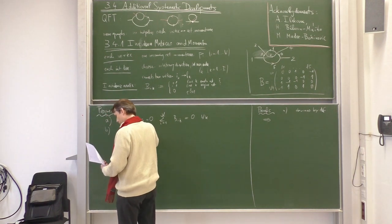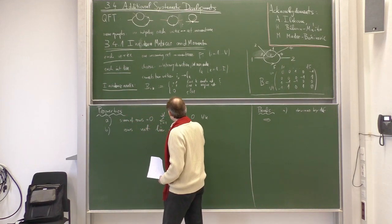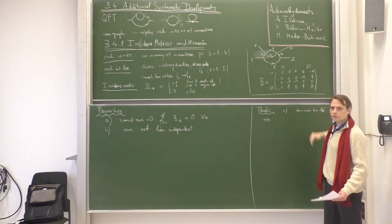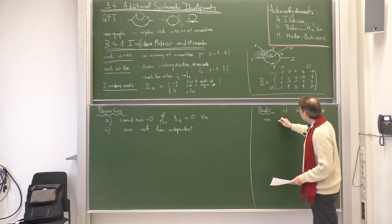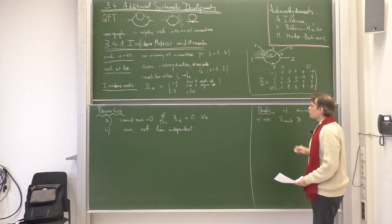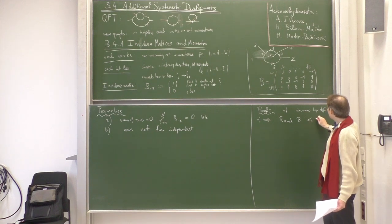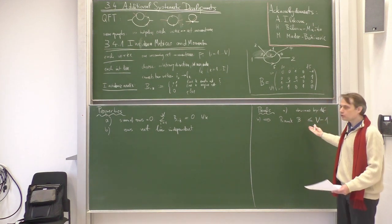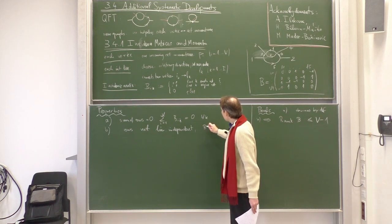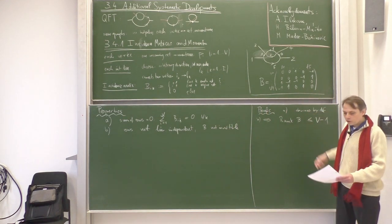This means that the rows are not linearly independent — that is property B — because any row can be obtained as the sum of all the other rows. So property B is also obvious. It follows that the rank of such an incidence matrix can be at most V minus 1, so rank(B) ≤ V − 1. We also note that B is of course not invertible if the rows are not linearly independent.